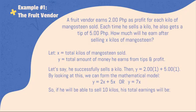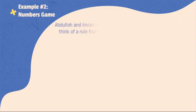Let's say he was able to sell 10 kilos. The total earnings for him will be Y is equal to 2 times 10 plus 5 times 10, which is 70 pesos. Example Number 2: Numbers Game.